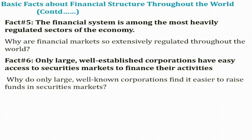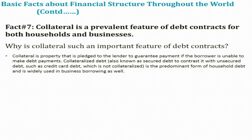Another fact: only large, well-established corporations have easy access to securities markets to finance their activities. Well-established firms like Coca-Cola, Microsoft, and Google find it much easier to raise funds. You may have noticed that IPOs of well-established companies tend to be oversubscribed. So why do only large, well-known corporations find it easier to raise funds in securities markets?